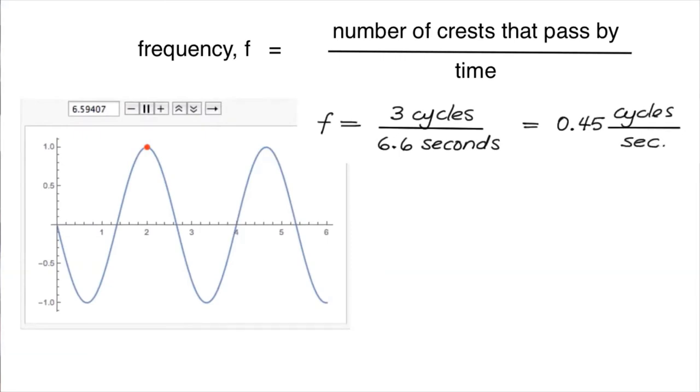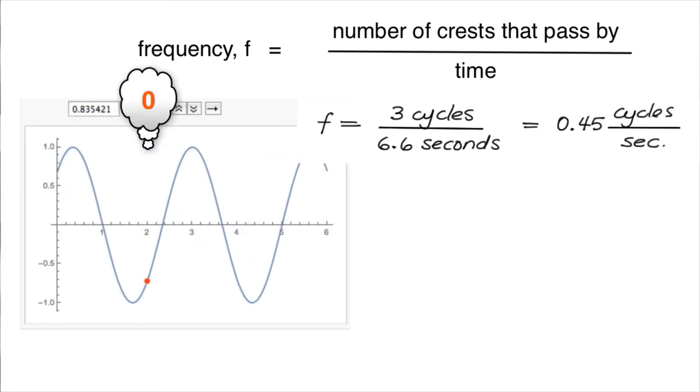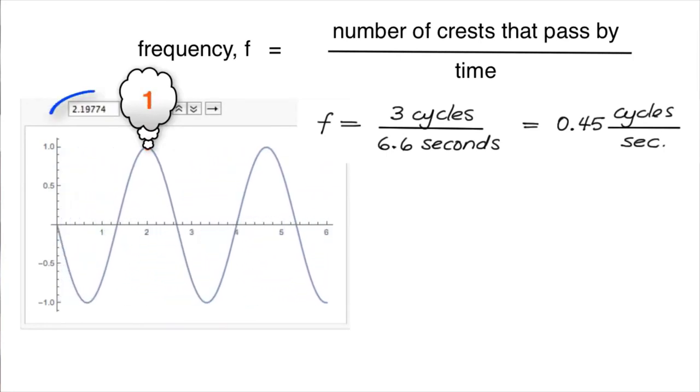Or if I use the time to count only one crest passing by, that's one cycle per 2.2 seconds. This is the same as one on the period of the wave.